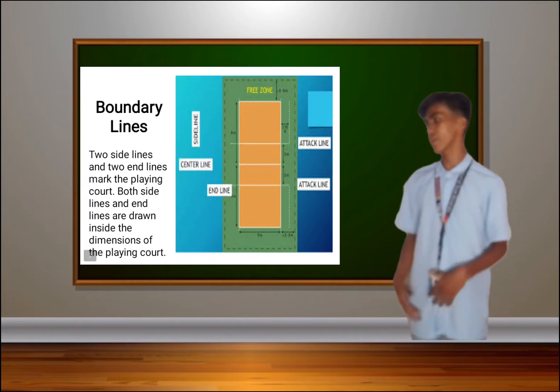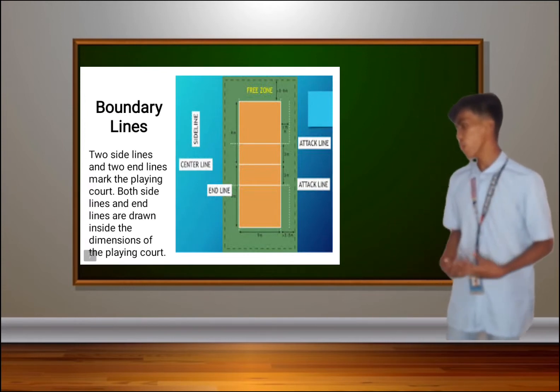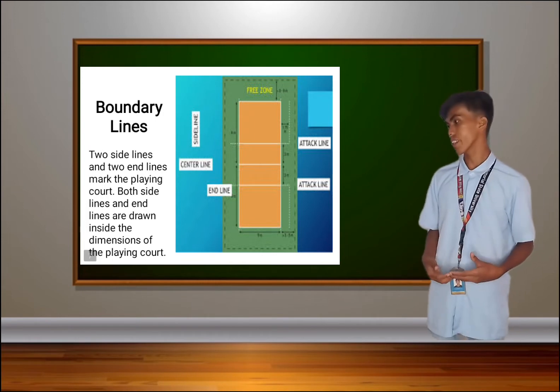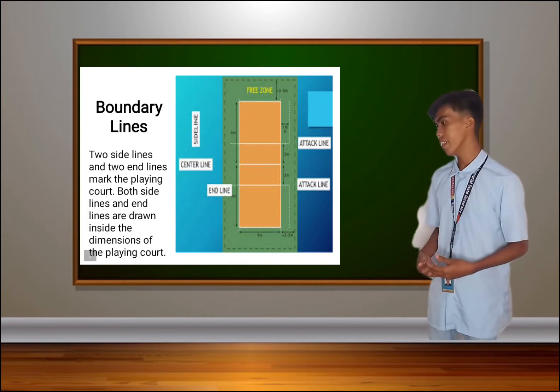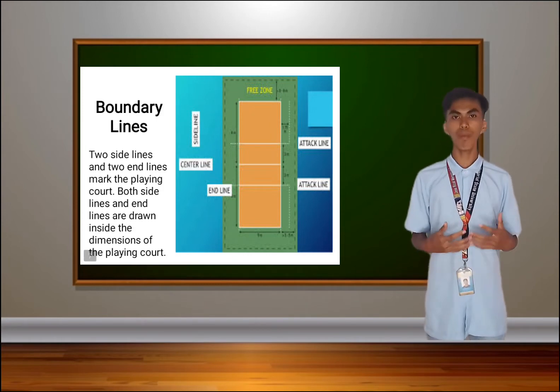Under the line of the court is the boundary lines. Two side lines and two end lines mark the playing court. Both side lines and end lines are drawn inside the dimension of the playing court.